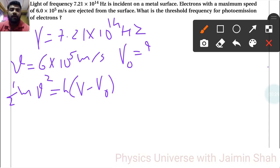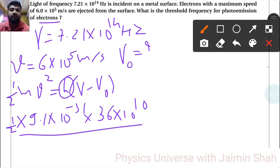Now ½mv², so ½ times m, the mass of electron, 9.1 × 10⁻³¹, times v² is 36 × 10¹⁰. Upon dividing, this h goes to the left-hand side denominator.